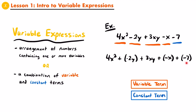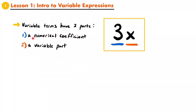Constant terms are pretty boring — they just involve a number that we know. But variable terms are a little bit more interesting. They actually have two different parts: what we call a numerical coefficient and then a variable part. The numerical coefficient is just the number that you see in front of the variable. We always like to put the number first and then the variable second. For example, 3x represents 3 times x. So in this case, 3 is the numerical coefficient and x is the variable part.